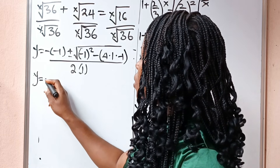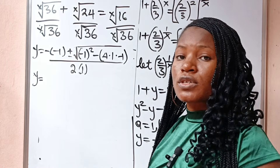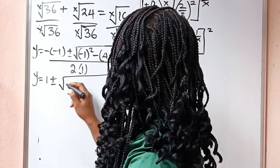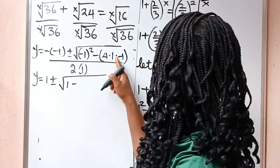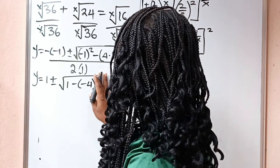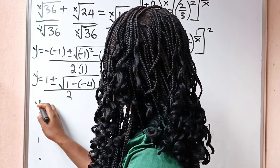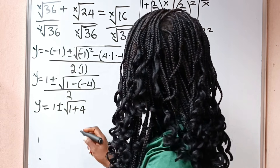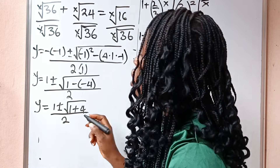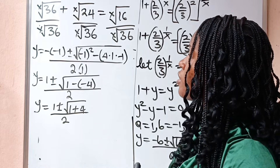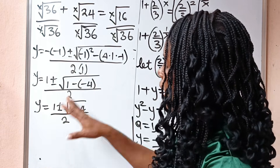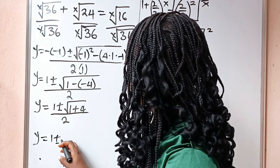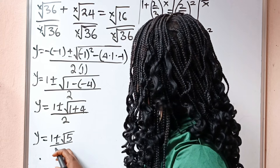So our y is equal to — minus minus gives us plus — so we are going to have 1 plus or minus square root of minus 1 squared is still 1, then minus 4 times minus 1 gives plus 4, everything divided by 2. Note that we are not looking for the value of y — we are looking for the value of x — so see how we are going to get x from y. Now y is equal to 1 plus or minus square root of 5, divided by 2.